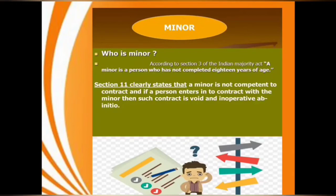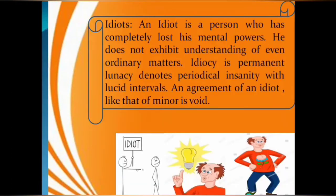An idiot is a person who has completely lost his mental powers and does not exhibit understanding of even ordinary matters. Idiocy is permanent. An agreement with an idiot, like that of minors, is void.